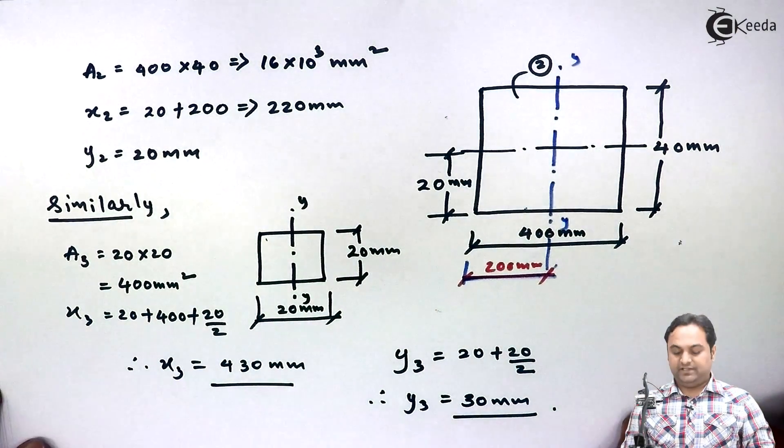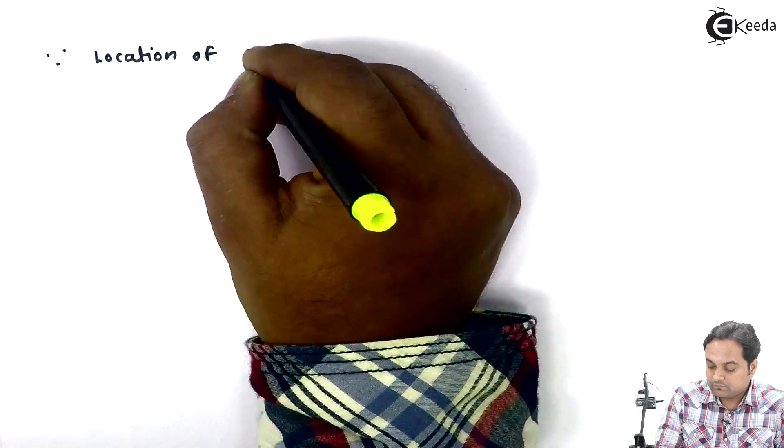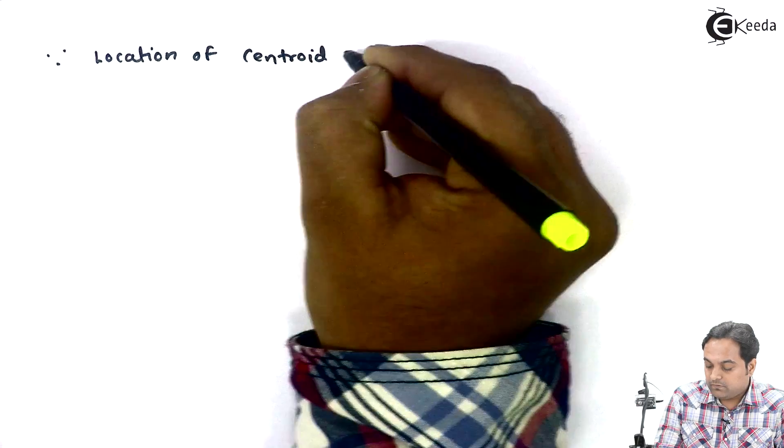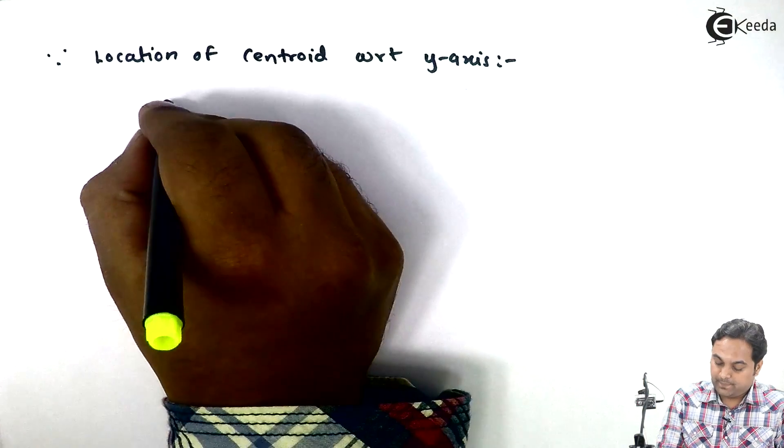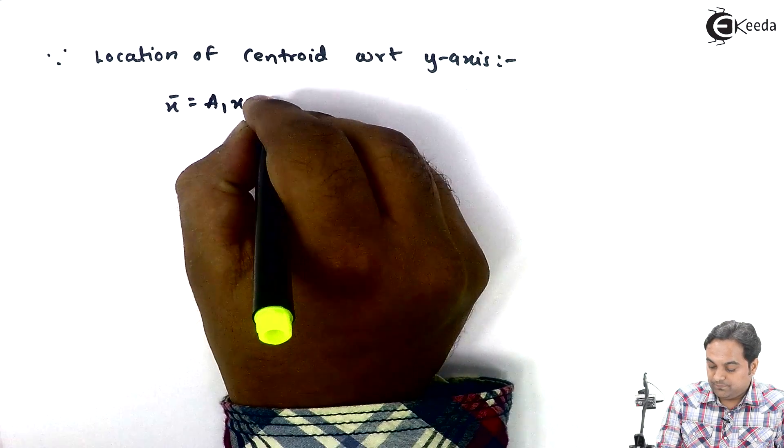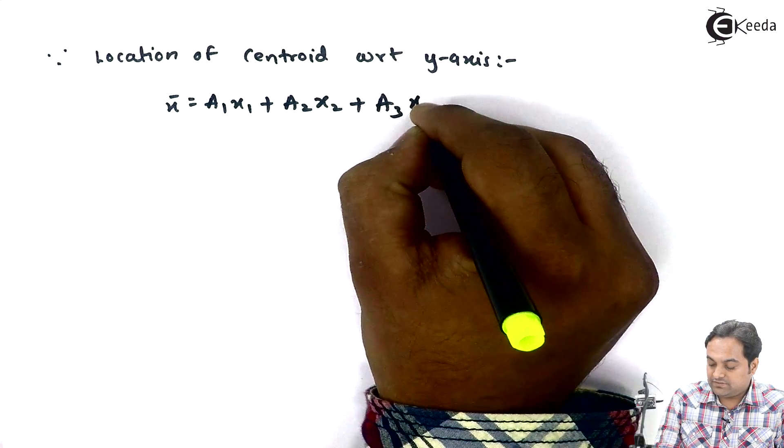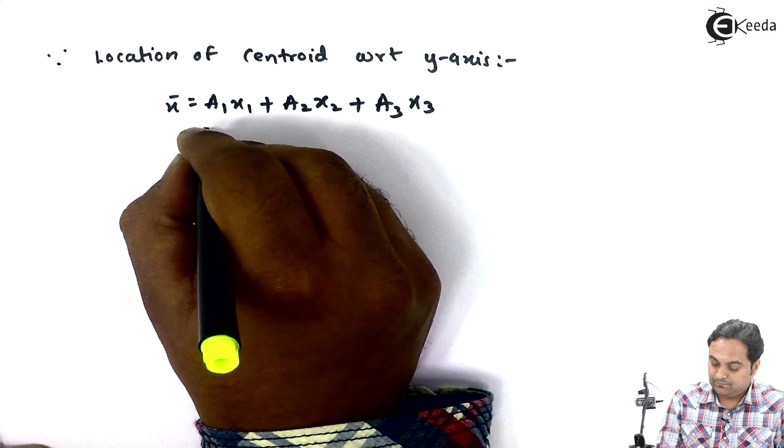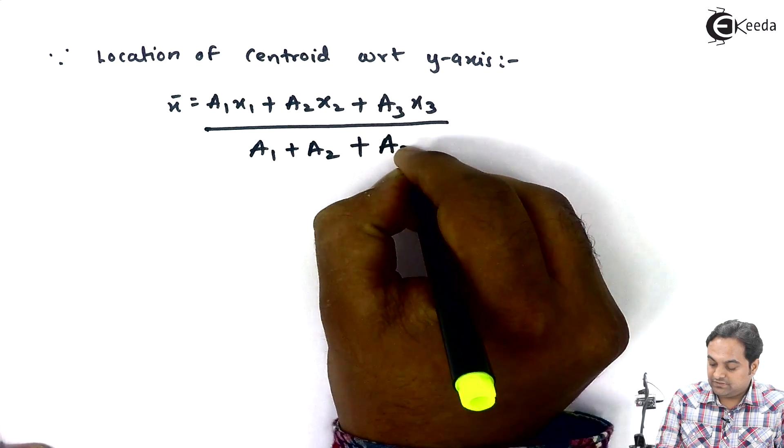Once I have all the values, I can easily go for the calculation of centroid. Since location of centroid with respect to y axis, it is given by X bar equals a1x1 plus a2x2 plus a3x3 upon a1 plus a2 plus a3.